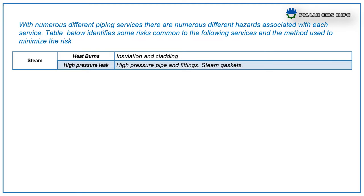Third: modification of existing pipelines at pipe racks or other areas. With numerous different piping services, there are numerous different hazards associated with each service. The following table defines some risks common to various services and the methods used to minimize those risks. For steam lines, the possible hazards and potential risks are heat burns and high pressure leaks. Control measures include insulation and cladding of pipelines, high pressure pipeline fittings, and steam gaskets.